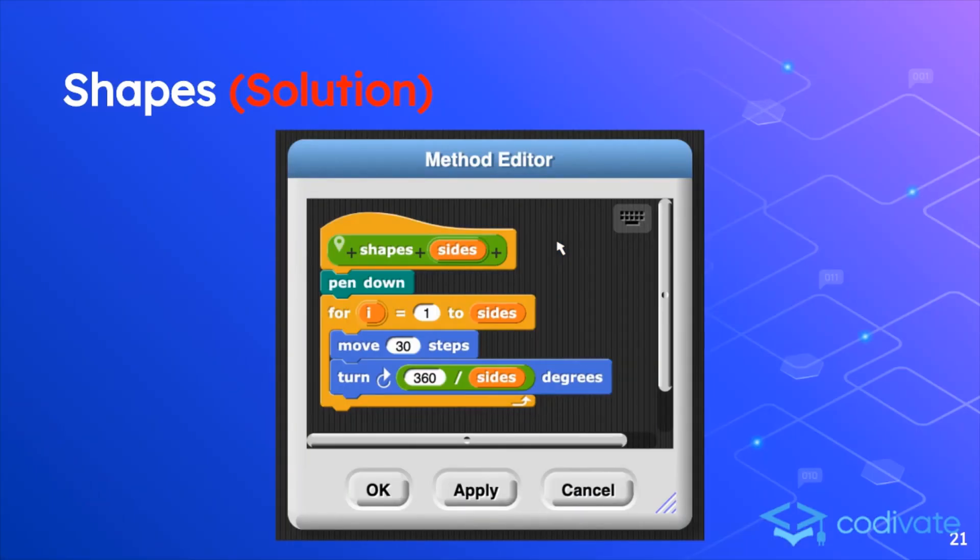Solution to the previous exercise. Using a parameter, sides, we put the pen down, and we go from 1 to sides in the for loop. We move 30 steps each time, and we turn 360 degrees divided by sides degrees. And this will mean that we will successfully complete the shape that we saw before. In this case, the hexagon.